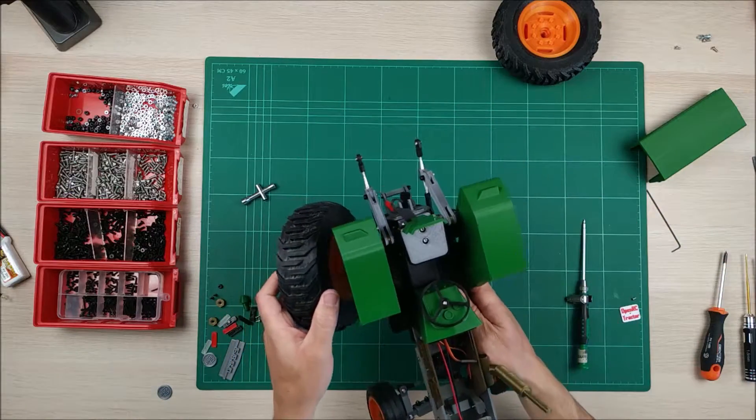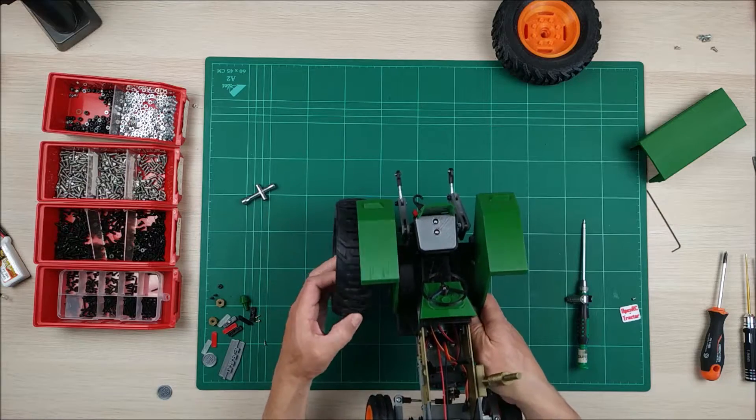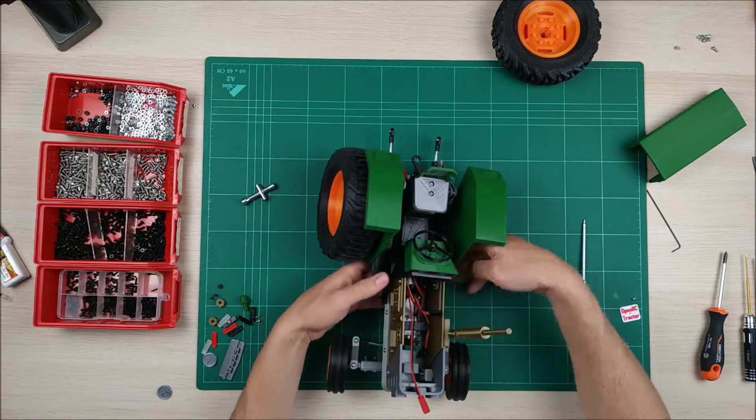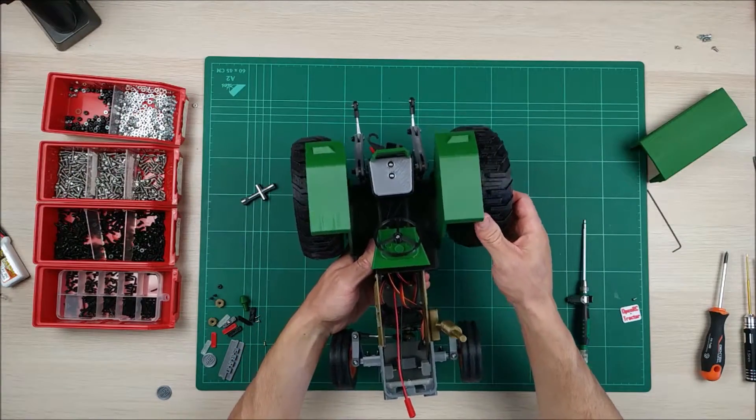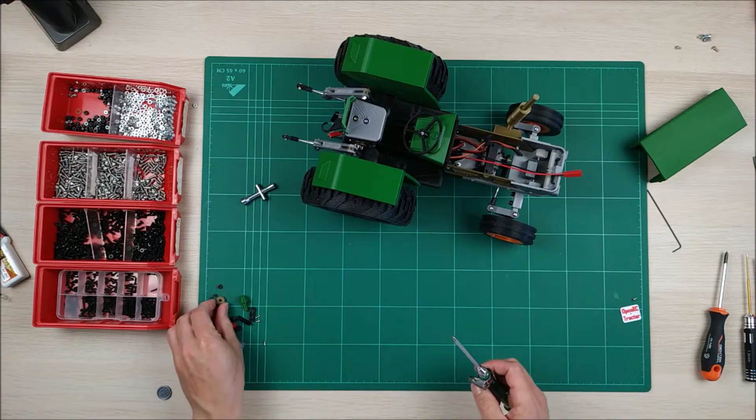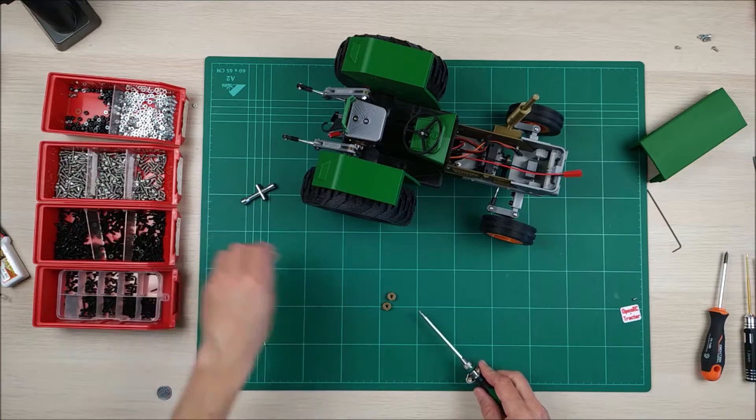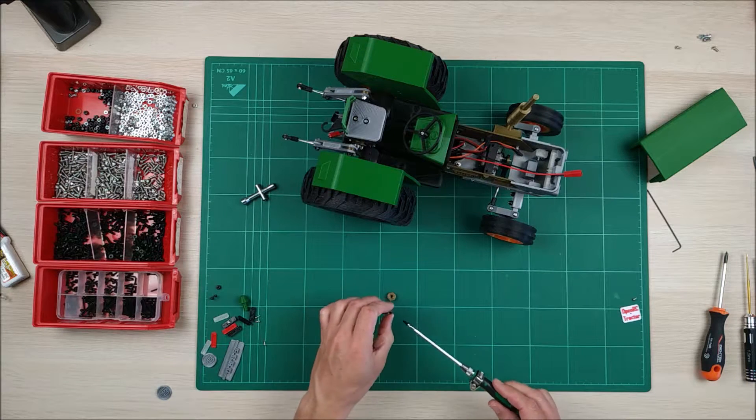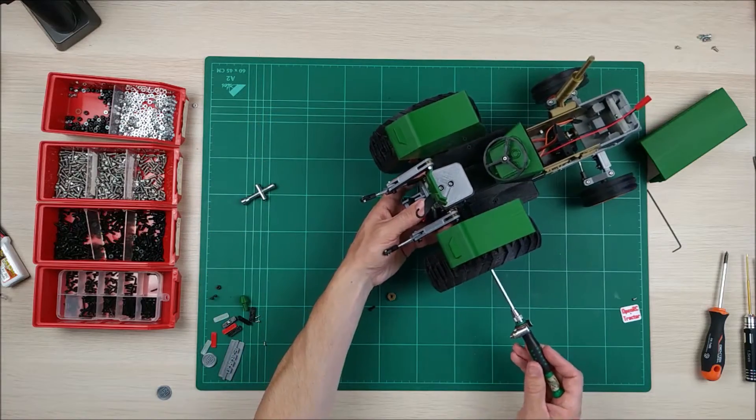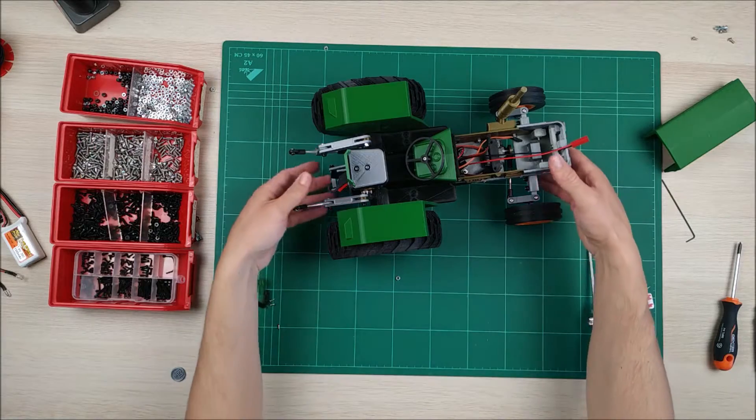Now let's go with the nuts. We have here the nuts to secure both wheels, both tires. So, we are going to use countersunk M3 8mm here. We have almost anything.